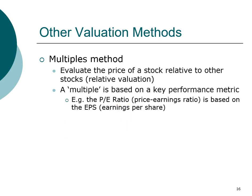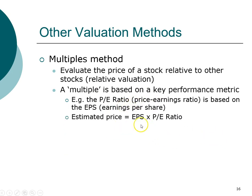The most common multiple is perhaps the PE ratio, which also stands for price-earnings ratio. The performance metric this ratio is based on is earnings per share. To use this multiple to estimate the price of a stock, you simply take the earnings per share from that particular stock and multiply it by the PE ratio of a peer group — companies that you believe share other similar characteristics. This approach is very common in the industry.